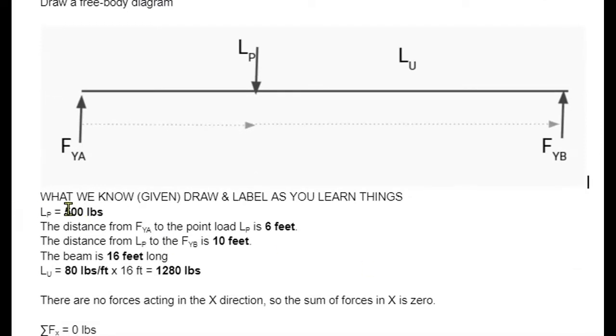All right, so the problem might sound like this. We have a point load of 500 pounds right here. It is 6 feet from this end, and from here to point B, it's another 10 feet. So the length of this beam is 16 feet. This beam has a weight distribution of 80 pounds per foot, and it's 16 feet long. So the total weight of this beam is 80 times 16, or 1,280 pounds. There are no forces acting in the x direction. That is something that civil engineers will need to consider, but we're doing a simple beam right now.